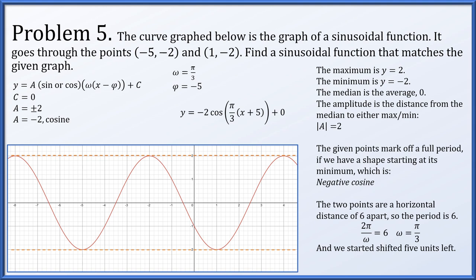This is one possible solution. c is 0 no matter what, and the amplitude should be plus or minus 2, but the horizontal shift depends on where you want your figure to start. We started at x equals negative 5, at the minimum — that's a negative cosine. If we started at x equals negative 2, that would be starting at a maximum, so we could use positive cosine with a equals positive 2, shifted only 2 units left. There are infinitely many possible solutions; we've just found one of them.